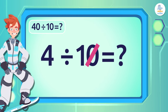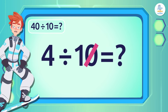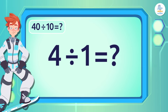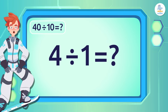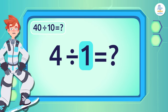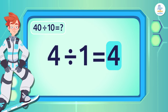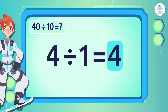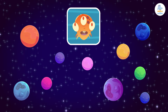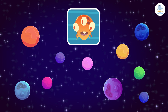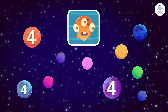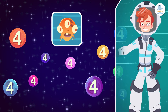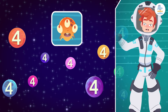We simply remove a zero from both numbers. When we remove the zero from 40, we get 4, and if we remove a zero from 10, we get 1. Now we only have to divide: 4 divided by 1 is 4. Much easier, right? That means on each of the ten planets there are four Martians. Removing the zeros helps us see that dividing by 10 is really simple!